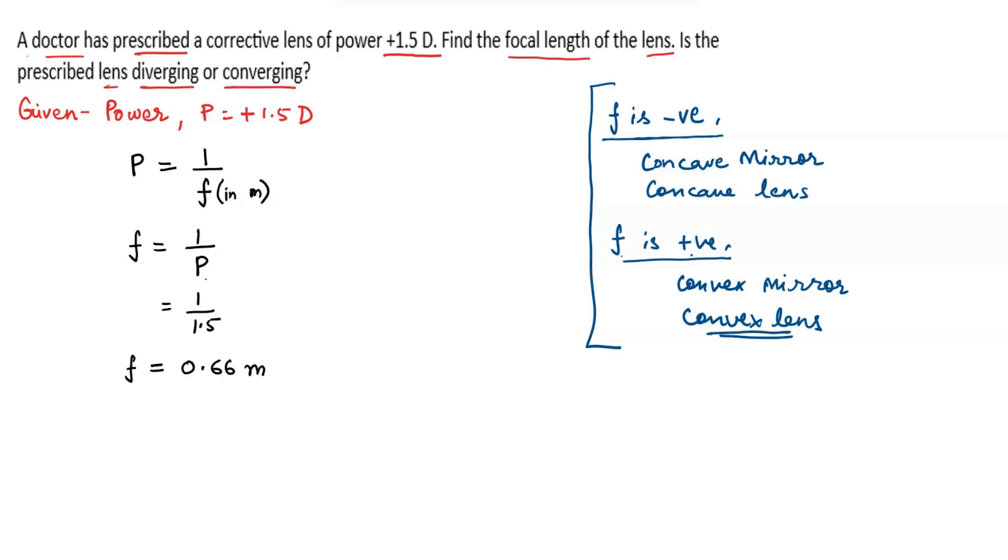Since the focal length is positive, the prescribed lens will be converging or we can say a convex lens.